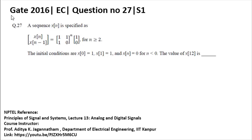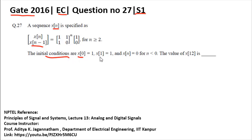This question was asked in GATE 2016 Electronics and Communication, indicator set 1. You are given a sequence x[n] with initial conditions x[0] = 1 and x[1] = 1, and also x[n] = 0 when n less than 0. You need to find out the value of x[12].